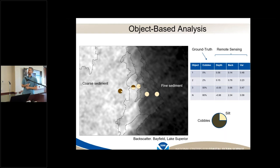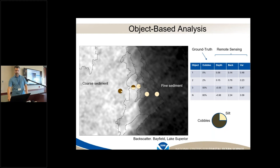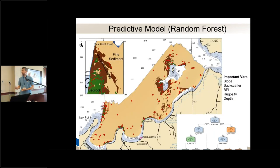Superimposed on the image of polygons and backscatter are the locations of five of our ground-truthing points, and you can see how cobbles and silt are distinguished based on the brown and yellow colors across that gradient. For this particular area, we used random forests to associate the variables collected in ground-truthing data with the remote sensing layers to develop layers distinguishing fine sediment from coarse sediment and bedrock.